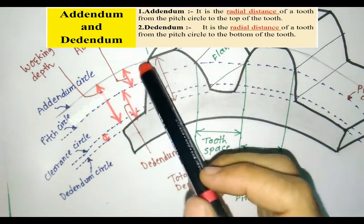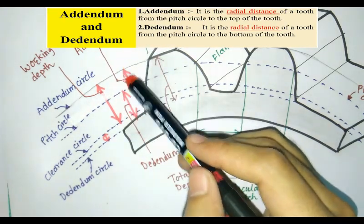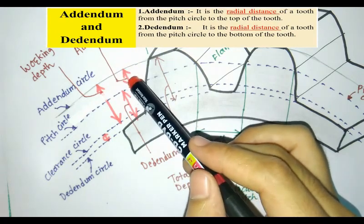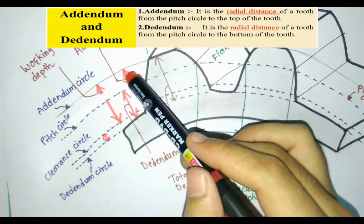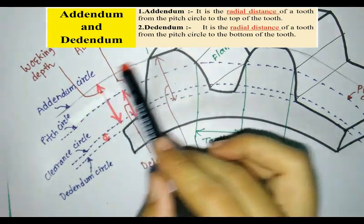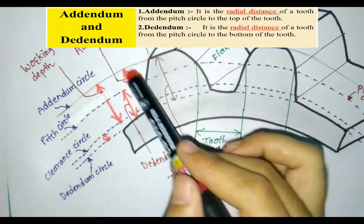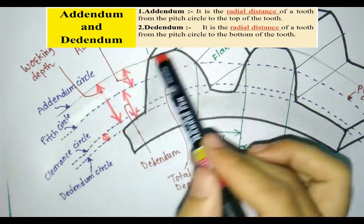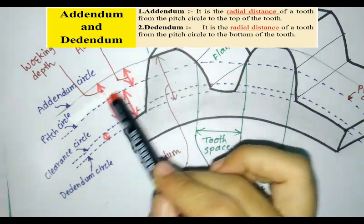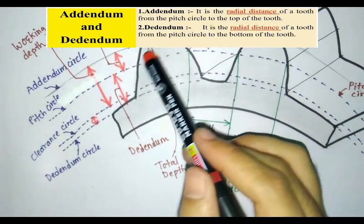Next one is addendum. Addendum is the radial distance of the tooth from the P circle to the top of the tooth.